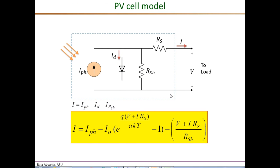Next we derive the equation for the series-connected PV module. First, consider the equation for a single PV cell from the single diode model: the current equals i_photon minus the forward-biased diode current minus the shunt resistance current, giving the external current. Sweeping the voltage and plotting current gives the I-V curves.